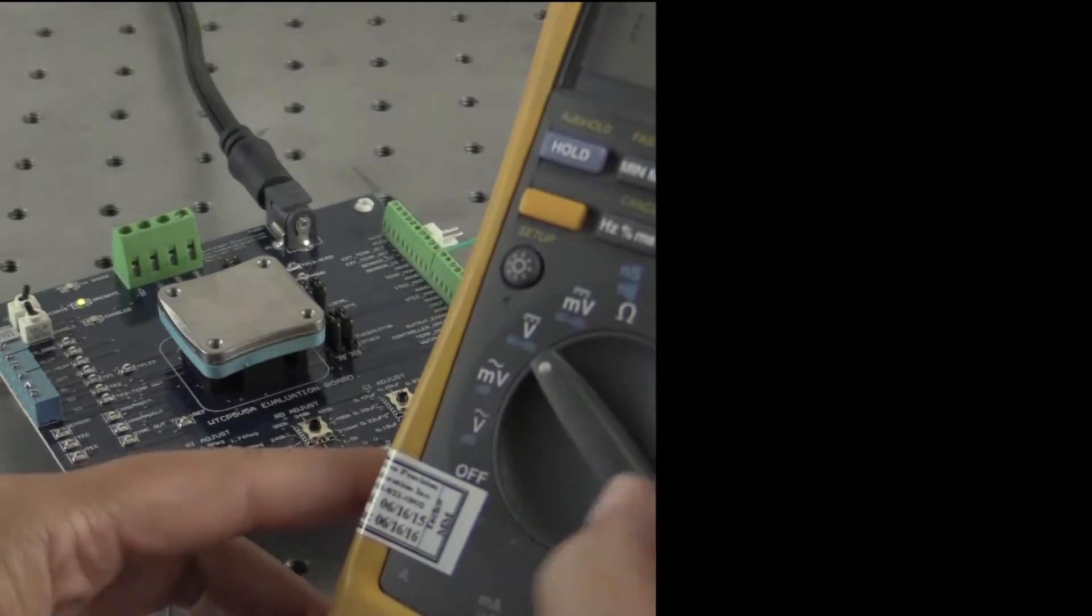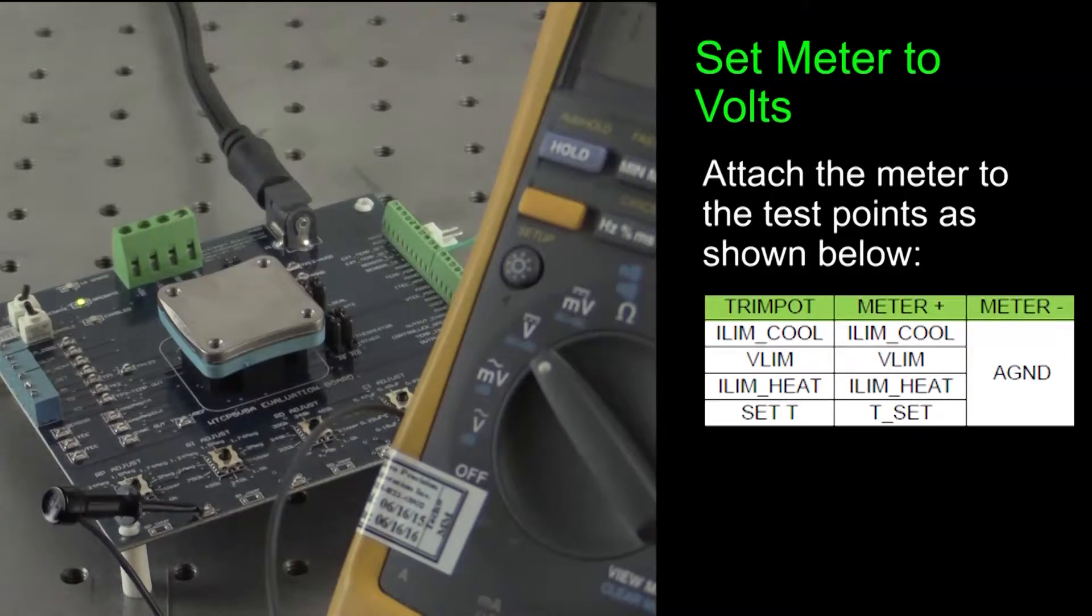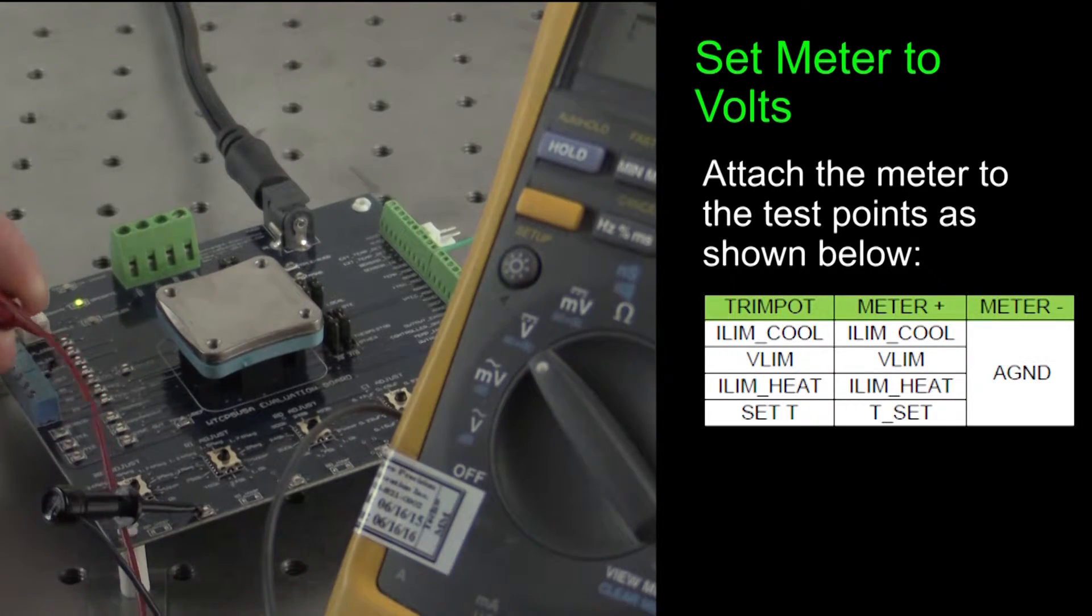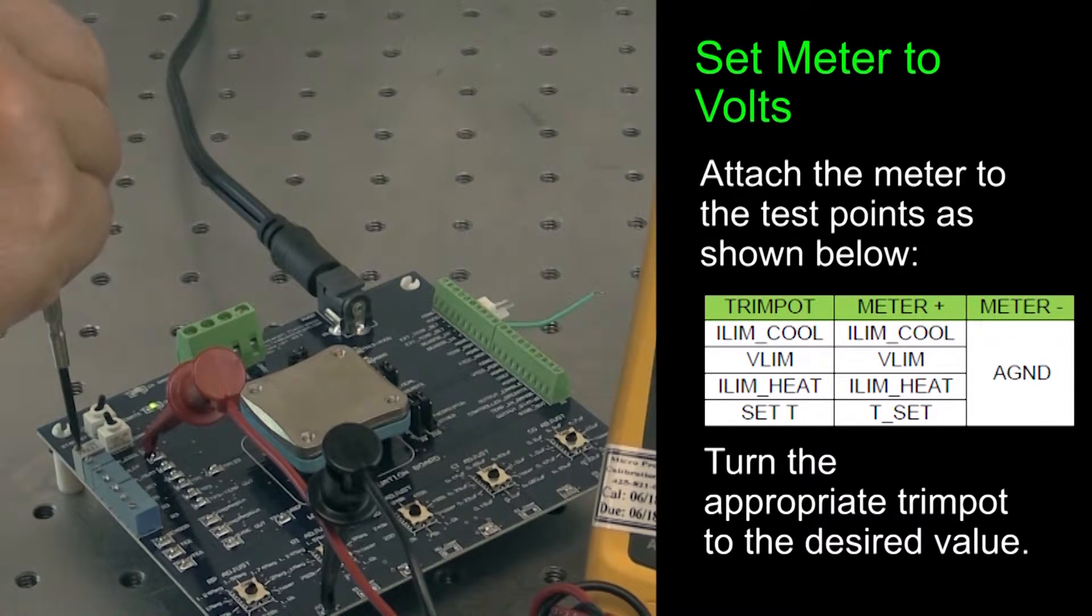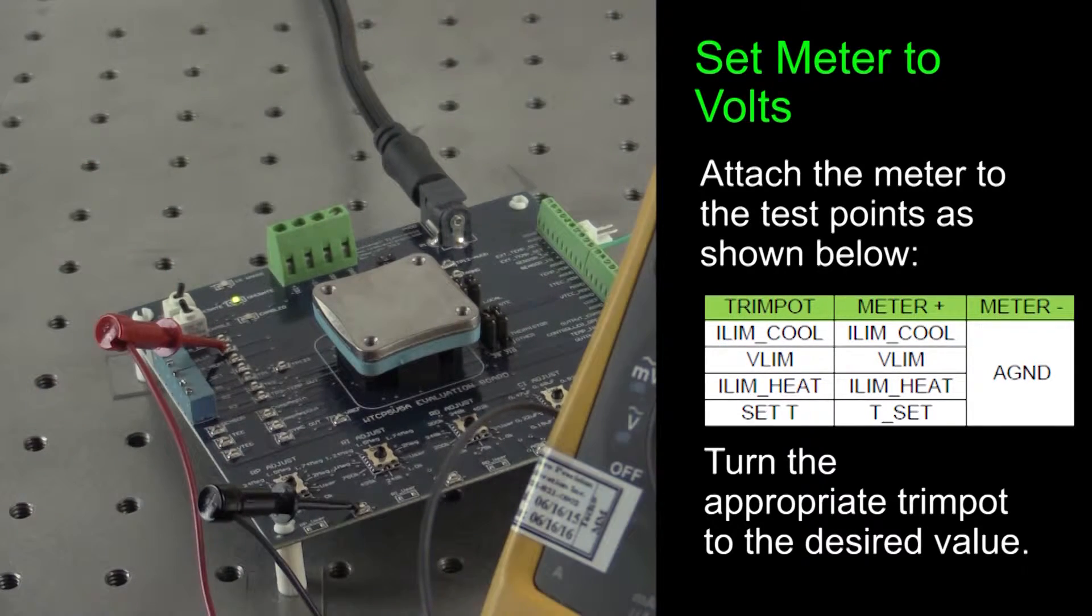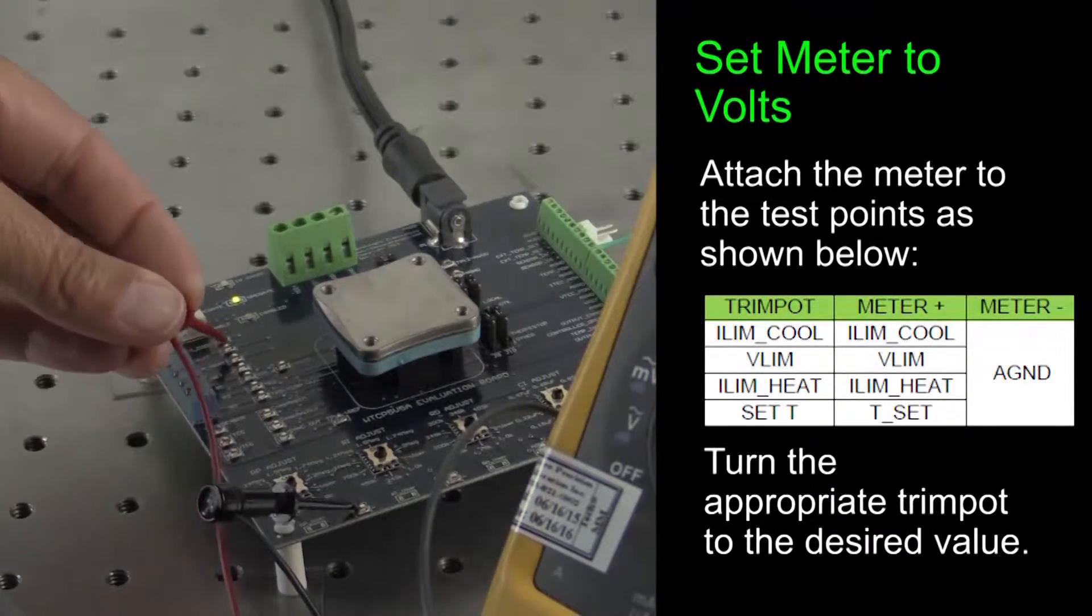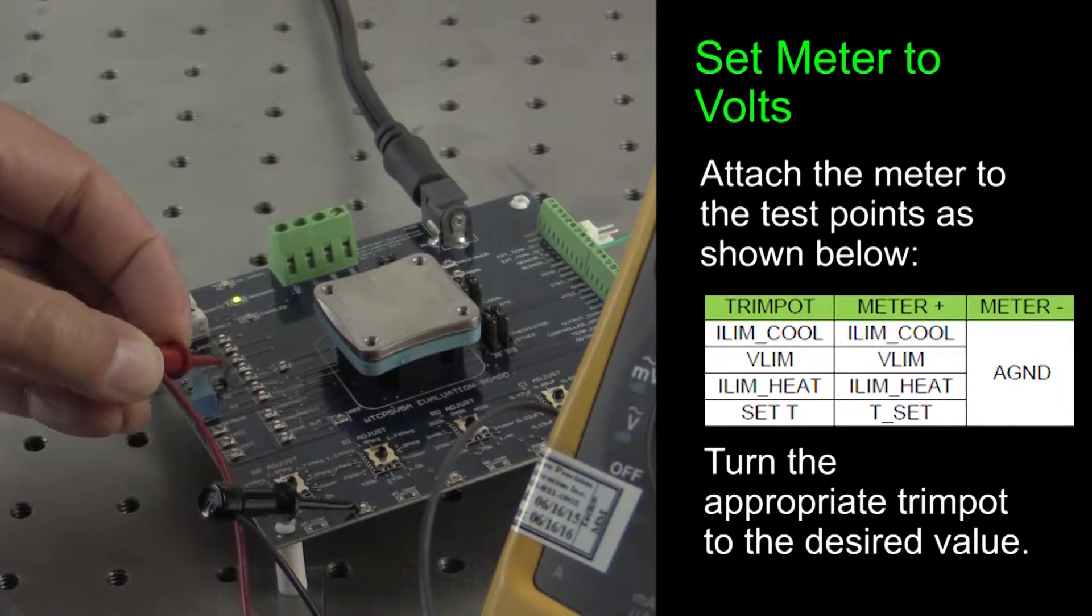Set the multimeter to read volts. Connect the negative lead to any test point labeled A ground. Connect the positive lead to the ILIM cool test point. Rotate the ILIM cool potentiometer until the value calculated for ILIM cool in the required settings is reached. Repeat the potentiometer adjustments for VLIM, ILIM heat, and TSET, moving the positive lead to the respective test points.